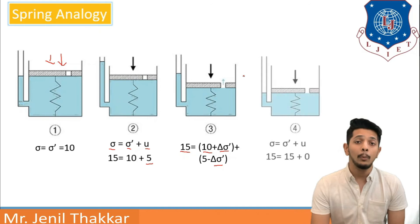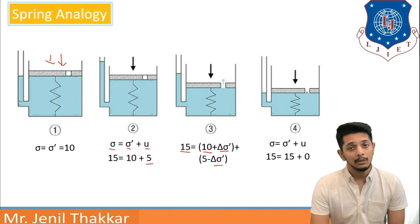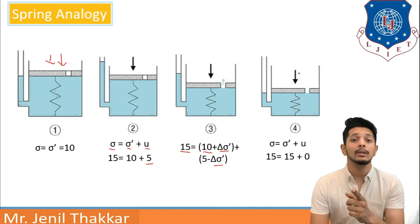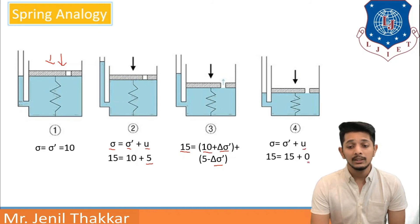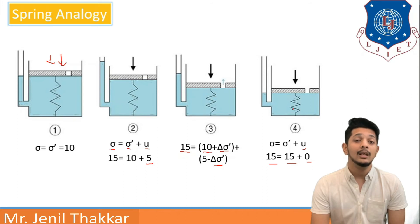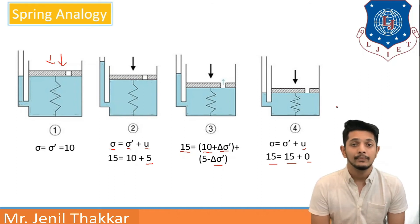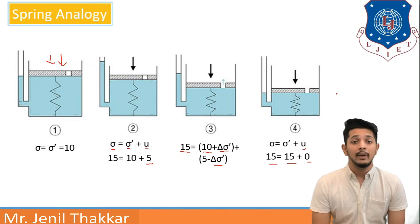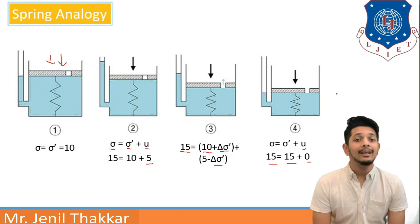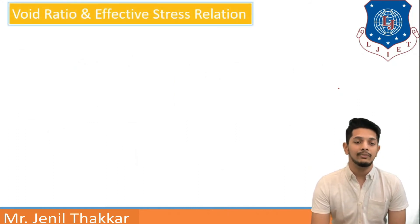If we open the valve more and then close it, more water will escape and the total external pressure is now taken by the spring only. Here u equals 0, so total stress is taken by effective stress; the spring takes all the load and water pressure is 0. In the spring analogy: the spring represents solid particles, the valve represents the permeability of soil, and water represents water in the voids. That concludes the spring analogy. Let us move forward to the void ratio and effective stress relationship.